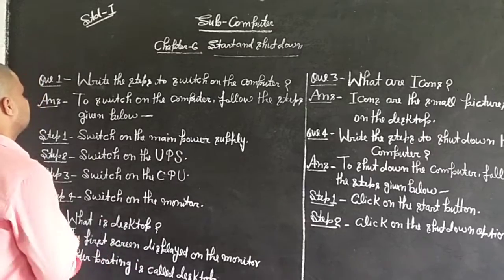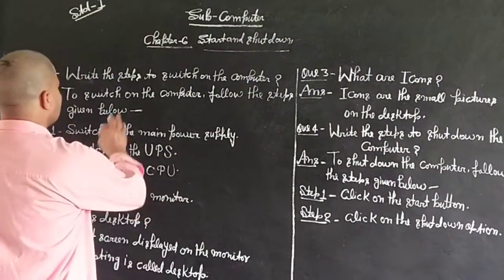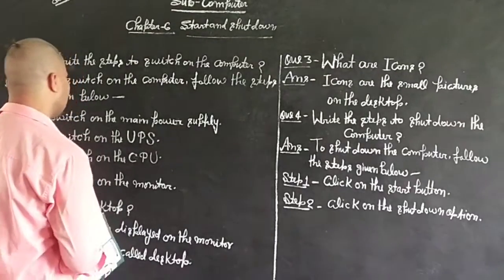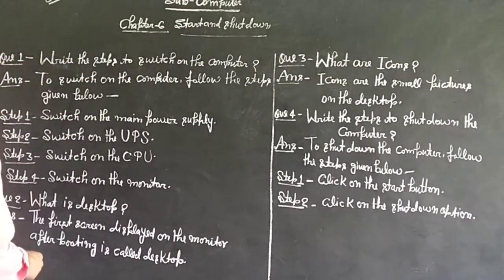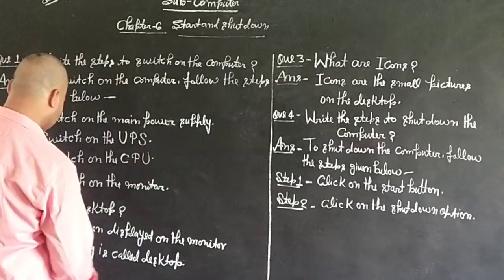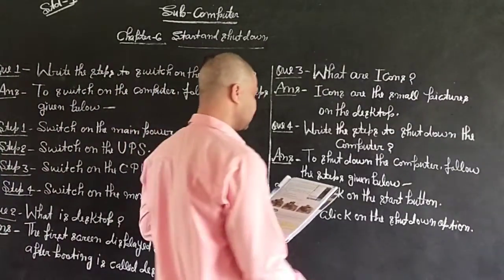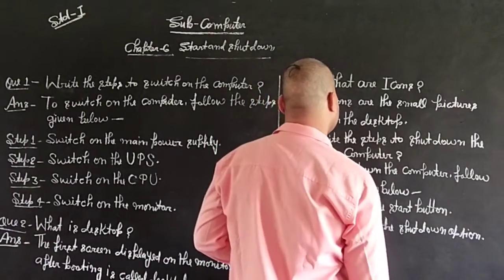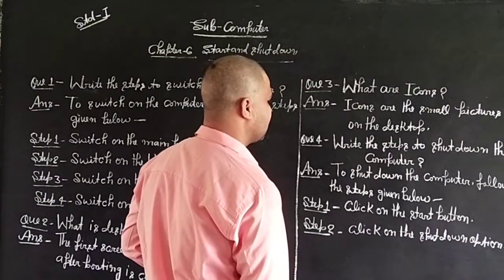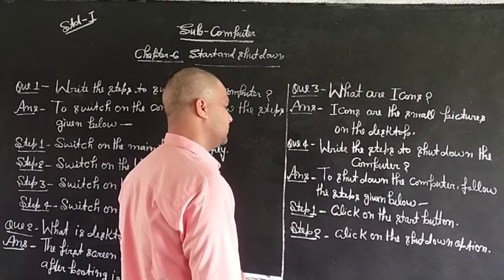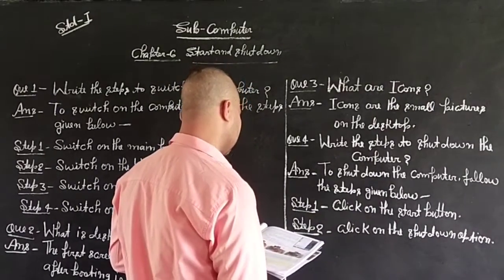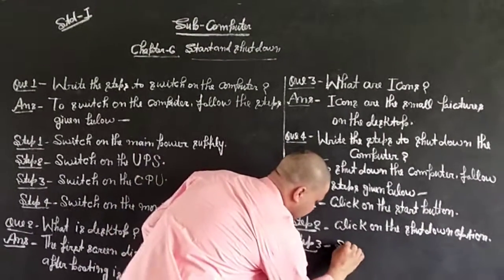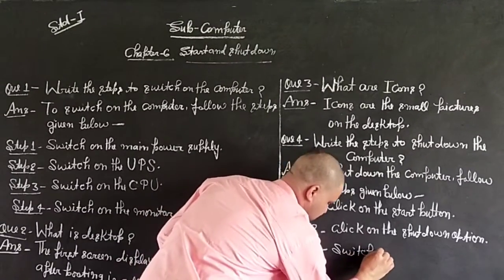Question: What are the steps to switch on the computer? Switch on the main power supply button, switch on the UPS, switch on the monitor. What is the desktop? The first screen displayed on the monitor after booting is called the desktop. What are the icons? Icons are the small pictures on the desktop. To shut down the computer, click on the start button, click on the shutdown option.